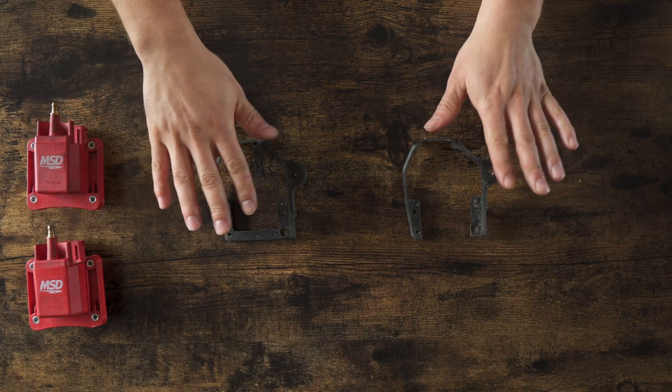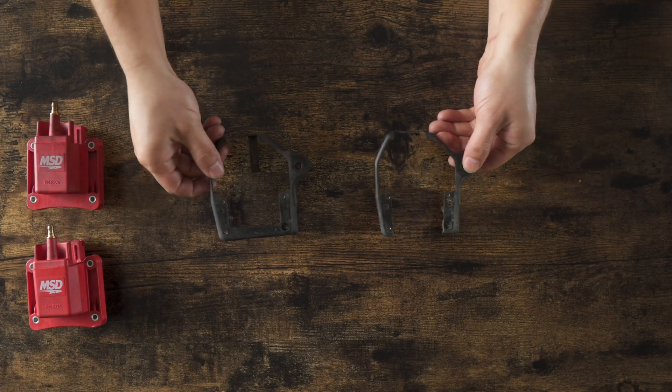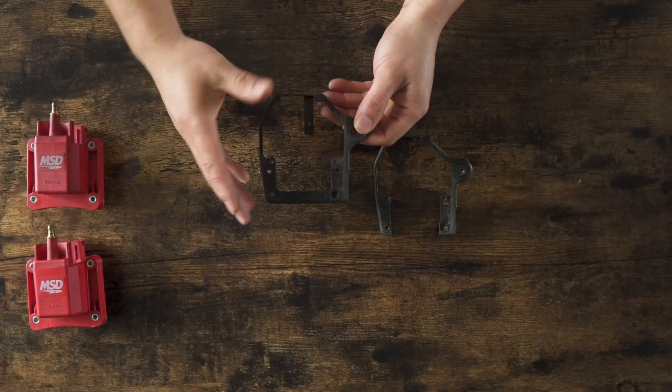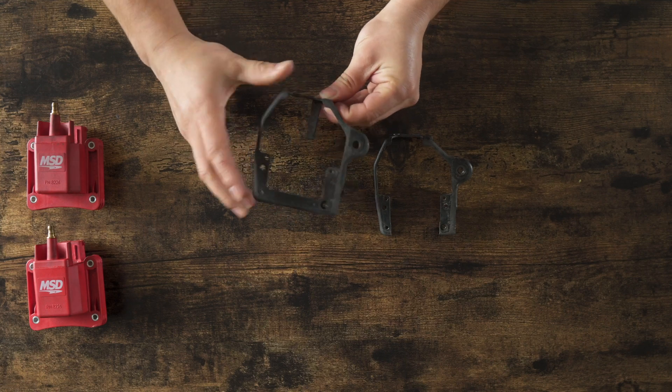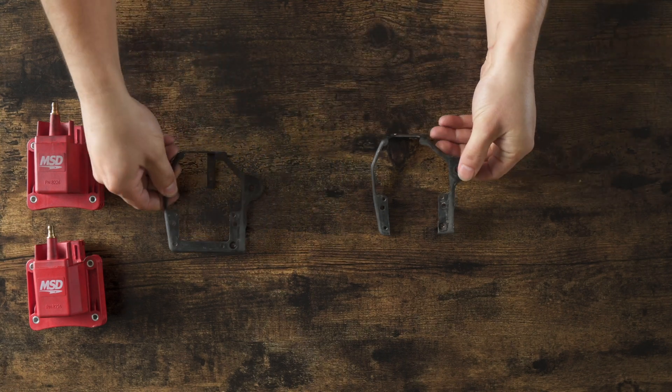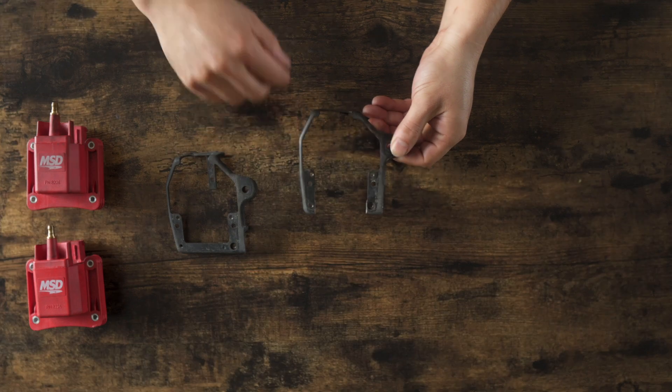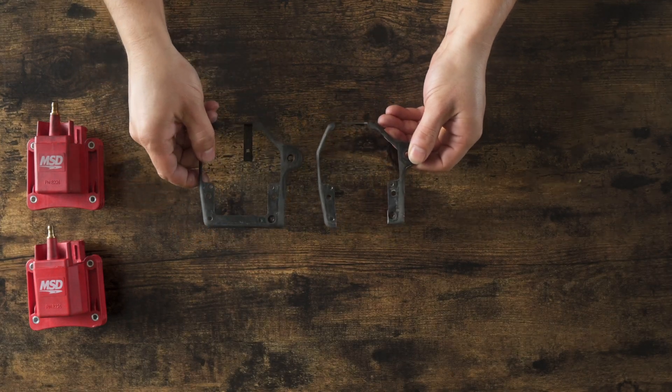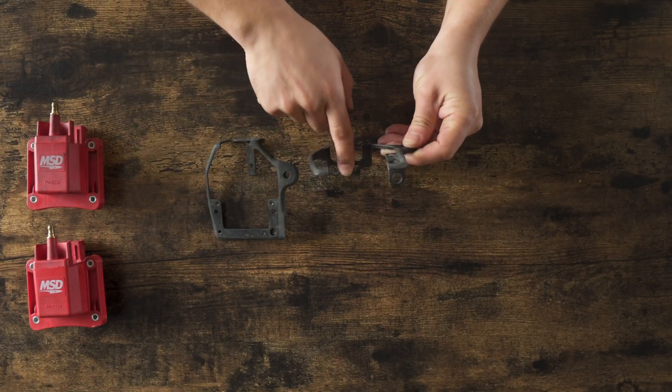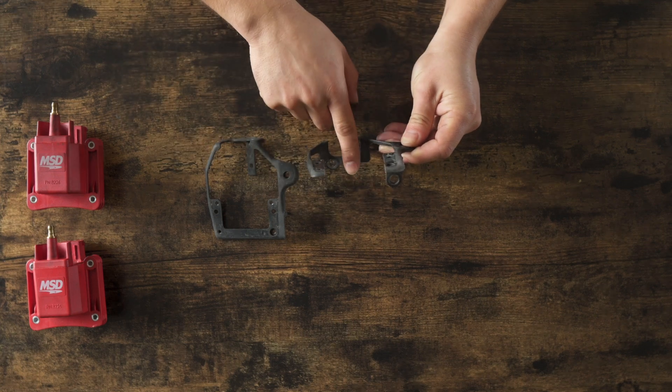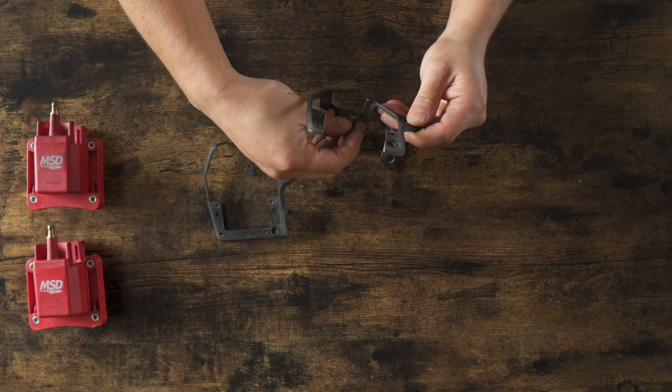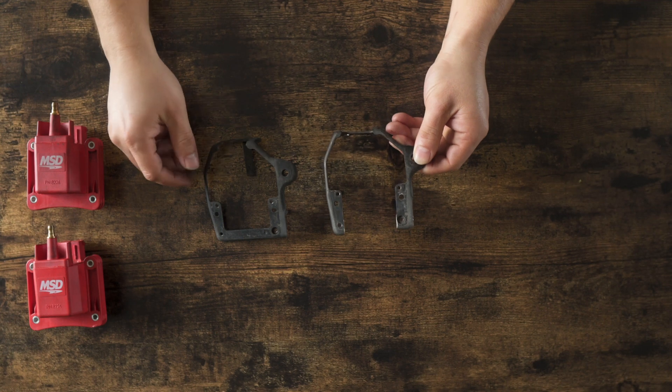First things first, you will have to do this on the first and second generation. So as you see, this bracket is uncut, completely OEM as it comes from factory, and this one has been modified. It has been cut, and the biggest differences you'll see is that's cut there, and then this is no longer here.